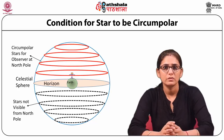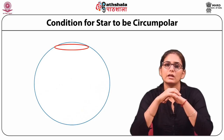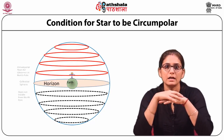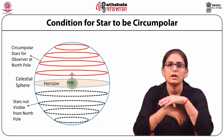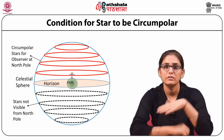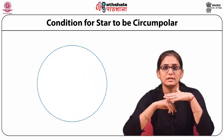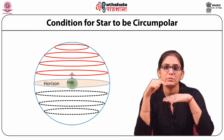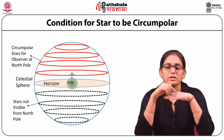For an observer at the North Pole, all stars in the Northern Hemisphere with declination greater than 0° are circumpolar. Stars in the Southern Hemisphere, with declination less than 0°, will never rise — they are always below the horizon. For an observer at the South Pole, all stars in the Southern Hemisphere with declination less than 0° are circumpolar, and stars in the Northern Hemisphere with declination greater than 0° never rise.